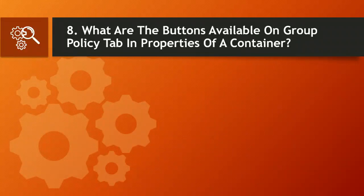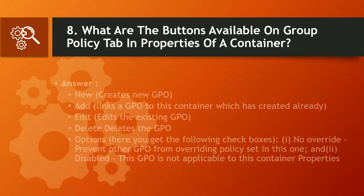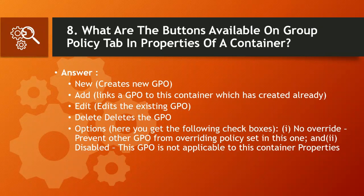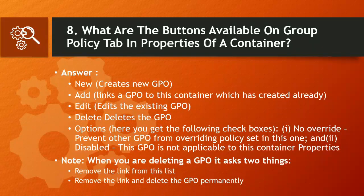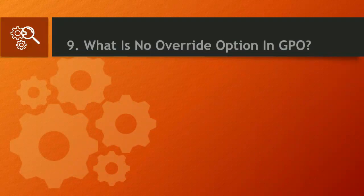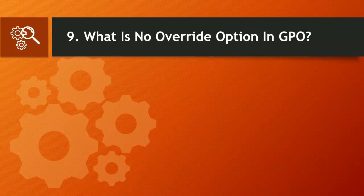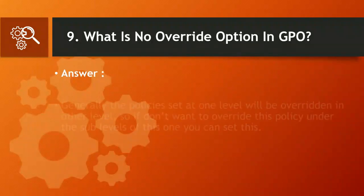Question 8: What are the buttons available on the group policy tab in properties of a container? Answer: New — creates a new GPO. Add — links a GPO to this container which has already been created. Edit — edits the existing GPO. Delete — deletes the GPO. Options — here you get checkboxes: No Override (prevents other GPOs from overriding policy set in this one) and Disabled (this GPO is not applicable to this container). Note: when deleting a GPO, it asks two things — remove the link from this list, or remove the link and delete the GPO permanently.